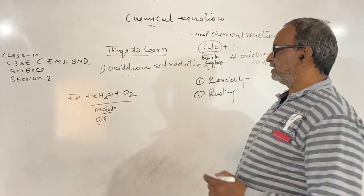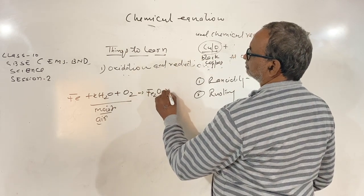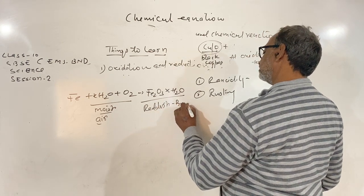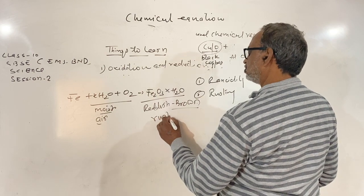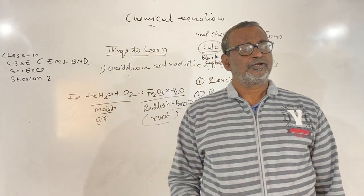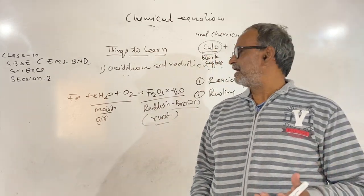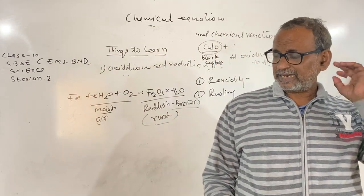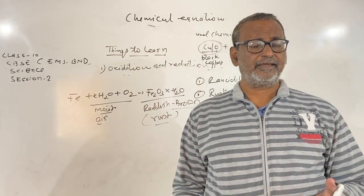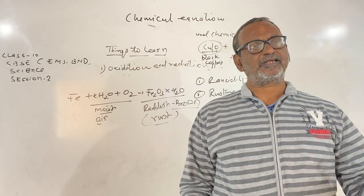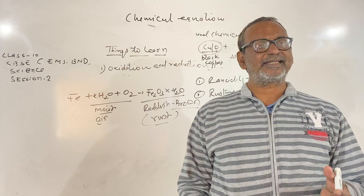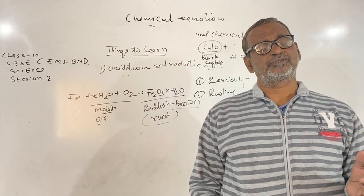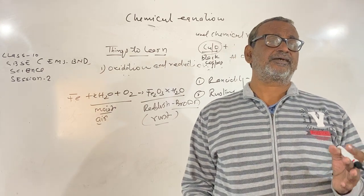When iron objects come in contact with moisture and oxygen from the air, they form a hydrated oxide. This hydrated oxide is reddish-brown in color and is commonly known as rust. The process of formation of a layer of hydrated ferric oxide on iron objects due to reaction with moist air is called rusting. Since rust is flaky, crumbly, and soft, it gets separated from the metal and the fresh metal underneath is further exposed to rusting, making the process continuous. The metal becomes thinner, thinner, and weaker.